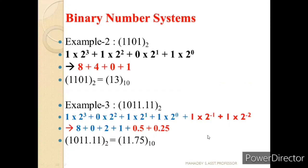Let us see another example: 1101 base 2. The positions are 0, 1, 2, 3. So it is 1 × 2⁰, 0 × 2¹, 1 × 2², and 1 × 2³. When we add these numbers: 8 + 4 + 0 + 1 = 13. So 13 in decimal is represented as 1101 base 2 in binary.